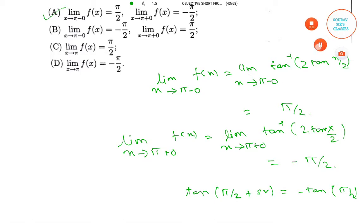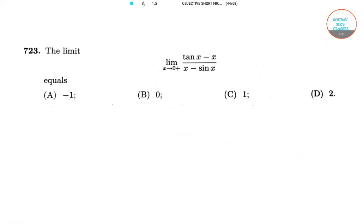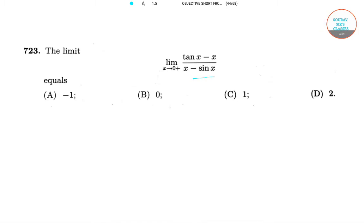In the next question, we have to find the value of (tan x minus x) divided by (x minus sin x) when x positively tends to 0. By applying L'Hôpital's theorem,